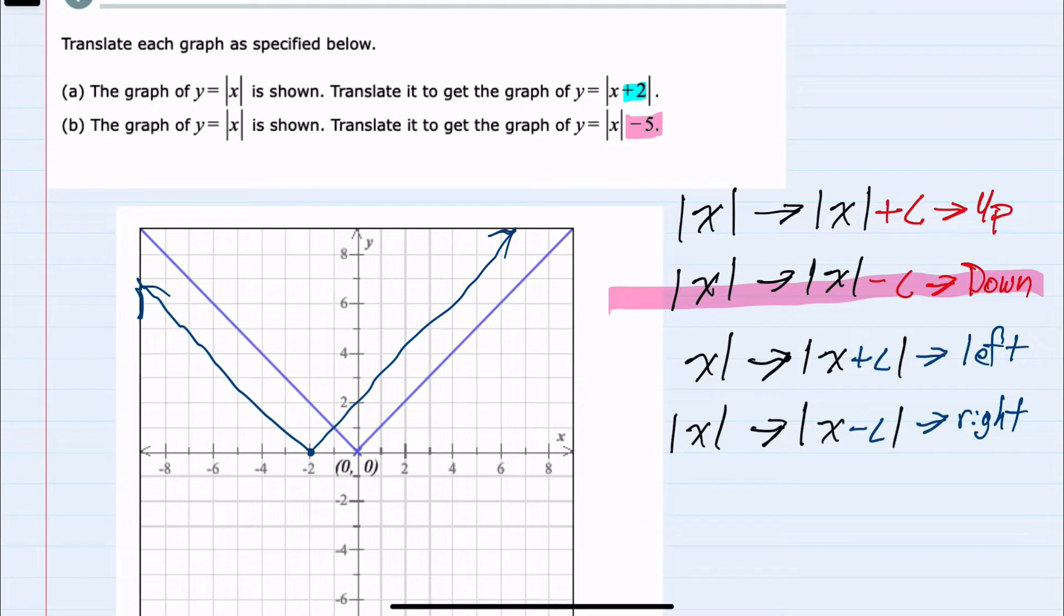So again, starting with our original function, if I translate it down five units, it would still have the same V shape, just shifted down five.